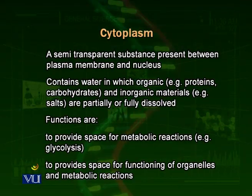For example, glycolysis — the breakdown of glucose — occurs in the cytoplasm. The enzymes required to break down glucose into smaller parts and to release energy are present inside the cytoplasm, dissolved in the cytoplasm. So cytoplasm gives space for organelles, space for metabolic reactions to occur, and space for the nucleus as well.